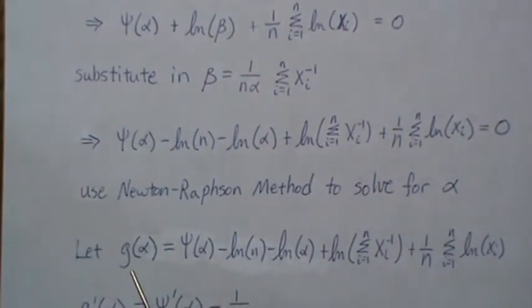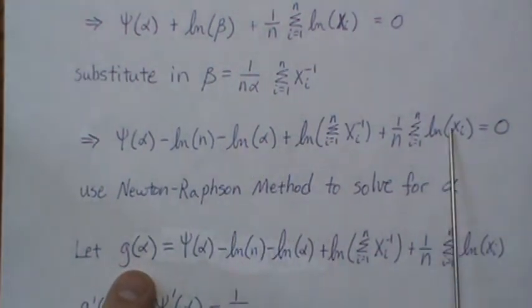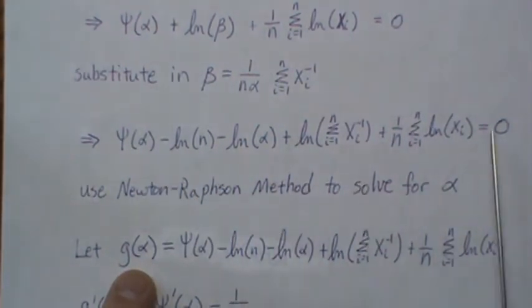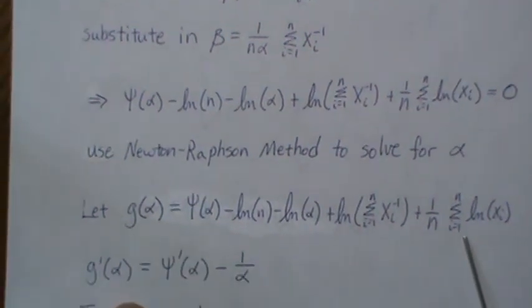Then here, so to use this method, we let G of alpha equal this function, right? And it's already set to zero. So that's this function. Then we have to find the first derivative of this function.